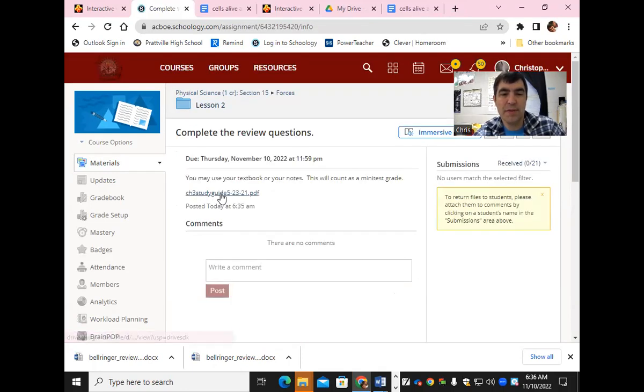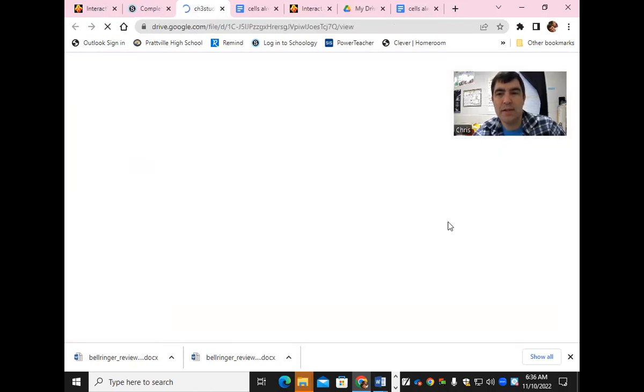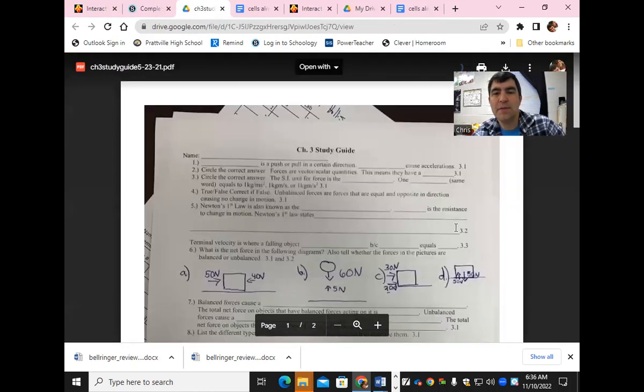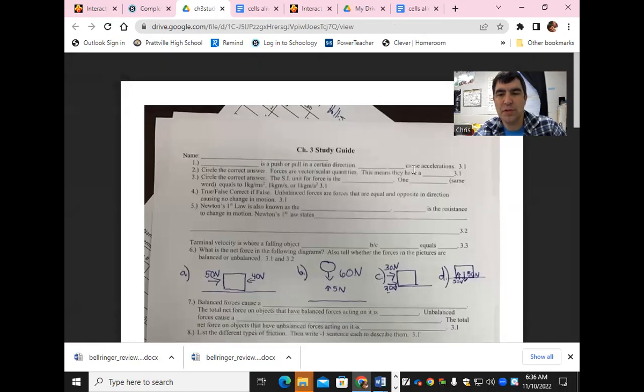And it says chapter three, study guide. And we open this up. Boom. There is the study guide. And it starts off with, say, blank is a push or pull in a certain direction. This blank causes accelerations. And it says it's in chapter three, section one.